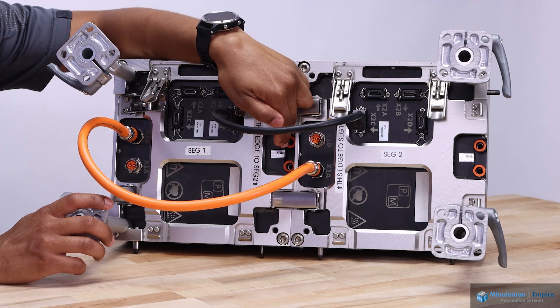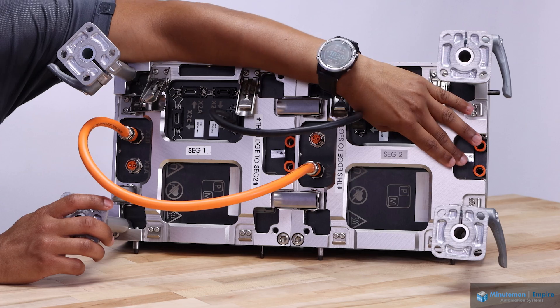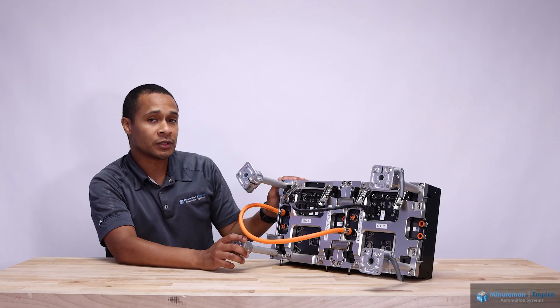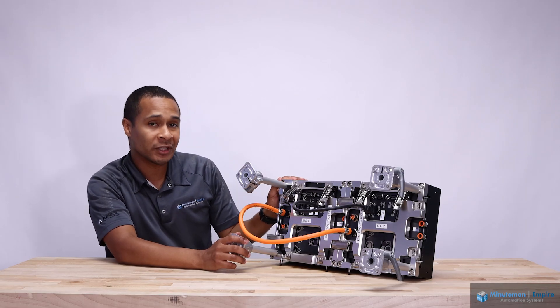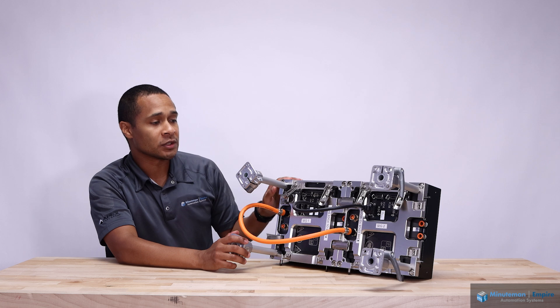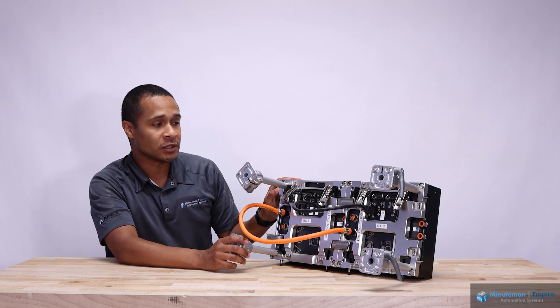And these two sets of orange ports if you can see them real quick there are for cooling purposes. You can cool with air or liquid and that will help pull some of that heat that is generated out of the system if necessary.